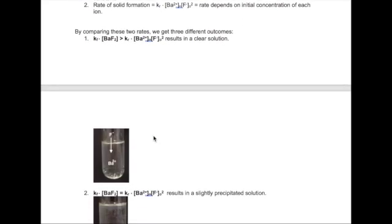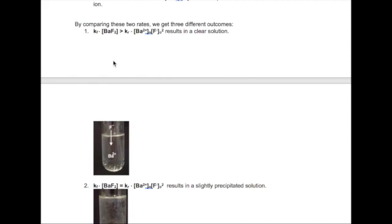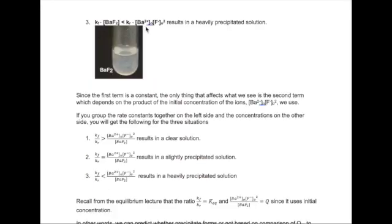If we compare these two rates, we have the following scenarios. One, we could have forward rate being greater than reverse rate. If this is the case, then we will see a clear solution because the solid is dissolving at a higher rate than it is being formed. Two, we could have forward rate equal to reverse rate. If this is the case, then we will see a slight precipitate in the solution because the solid is dissolving at the same rate that it is being formed. Three, we could have the forward rate being less than the reverse rate. If this is the case, then we will see a heavily precipitated solution because the solid is dissolving at a slower rate than it is being formed.